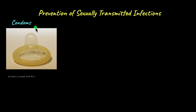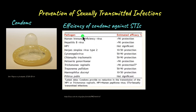Condoms are the only birth control method that prevent both pregnancies and STD transmission. A statistic from NCBI shows how effective condoms are: in the case of HIV, gonorrhea, and syphilis, condoms are almost 90% or more than 90% effective in preventing transmission. This is quite important because the incidence of these diseases is increasing worldwide and controlling their spread is critical.